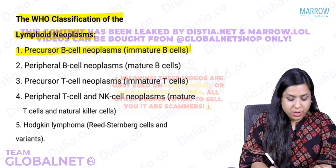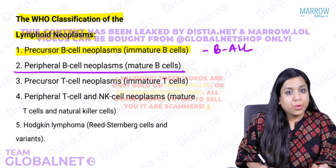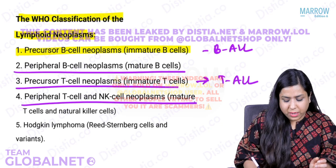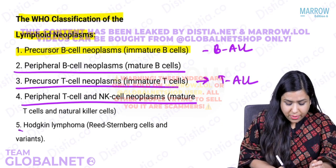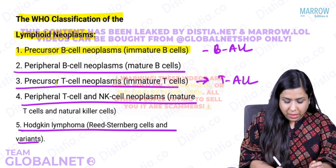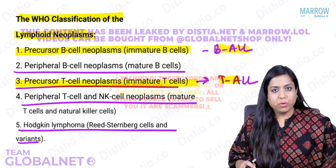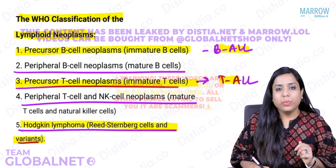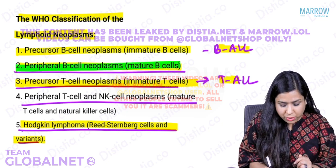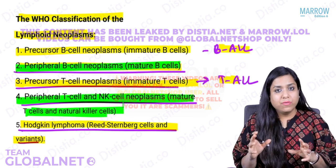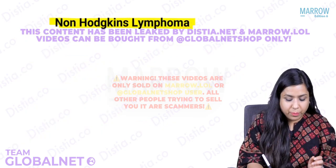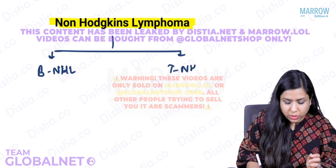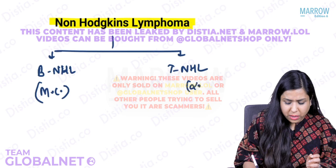We have precursor B cell neoplasm, which is basically B-ALL. We have peripheral B cell disorders, which are disorders of mature B cells. We have precursor T cell neoplasms, which is basically T-ALL. Peripheral T and NK cell disorders, which are disorders of mature T and NK cells, and then we have Hodgkin's lymphoma.